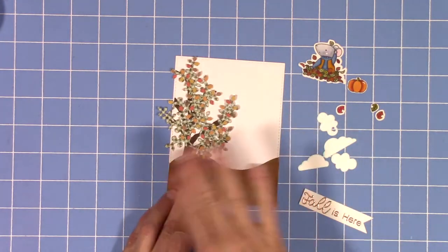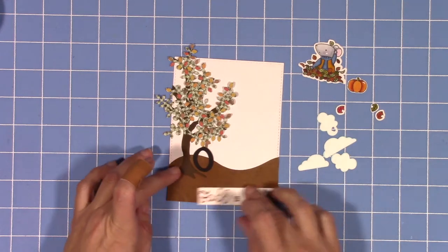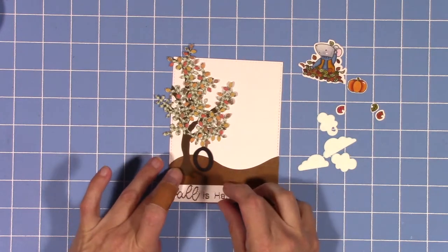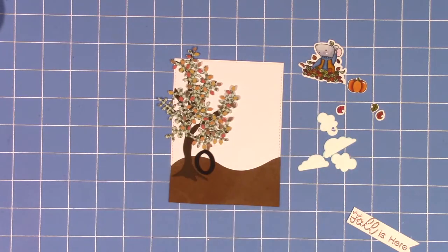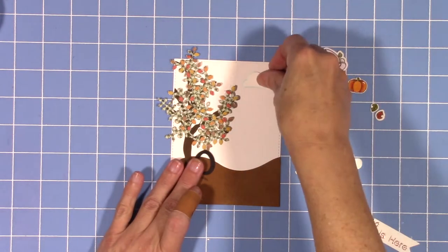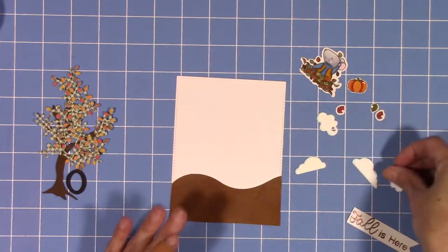I've already made my tree because the trees take a long time. I cut out all of my little leaves from that same paper pack, the Woodland Forest by Pebbles, and now I'm just figuring out where everything's going to go.